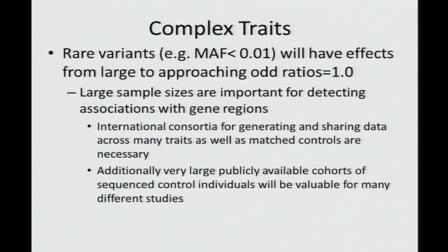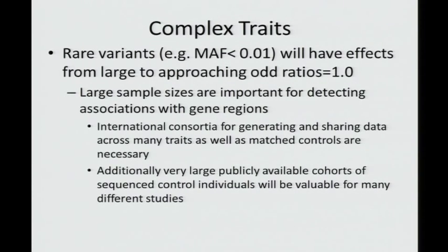Starting with complex traits: rare variants for complex traits are going to have effect sizes ranging from large to odds ratios approaching one. I don't think we can be as optimistic as many people were in the beginning—that these rare variants are going to have huge effects and we only need a small sample size to detect them. It's already extremely clear that effect sizes are not so large and we do need large sample sizes.